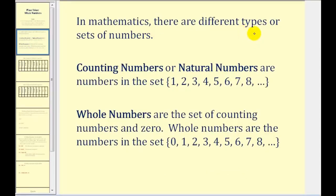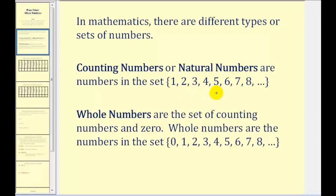In mathematics there are different types or sets of numbers. The counting numbers, sometimes called natural numbers, are the set of numbers as we see here, and you can see why they're often called the counting numbers: one, two, three, four, five, and so on — the numbers we use to count items.